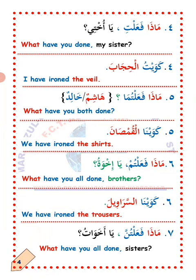Hamsa, number five. Maza fa'alatuma? — What have you both done? Talking to Hashim and Khalid. Answer: Kawaina al-kumsana — we have ironed the shirts. Kumsana is the plural form of kamis: kamisun means one shirt, kumsana means more than two shirts. La'allaka fahimt? I hope you understand. MashaAllah.